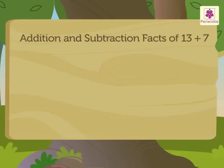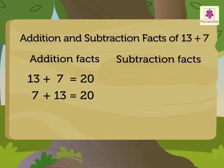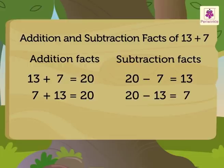From the above example, let us write the addition and subtraction facts of 13 plus 7. 13 plus 7 is equal to 20. 7 plus 13 is equal to 20. 20 minus 7 is equal to 13.